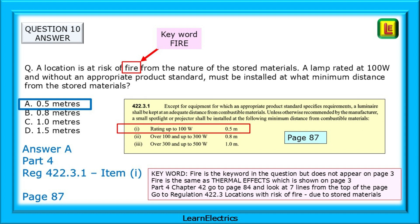The answer is A, 0.5 metres. Fire is the key word in the question, but does not appear on page 3. But fire is the same as thermal effects, which is shown on page 3. Part 4, chapter 42, is Thermal Effects, so go to page 84 and look seven lines from the top of the page. Go to regulation 422.3, locations with risk of fire due to stored materials, and there is the answer.